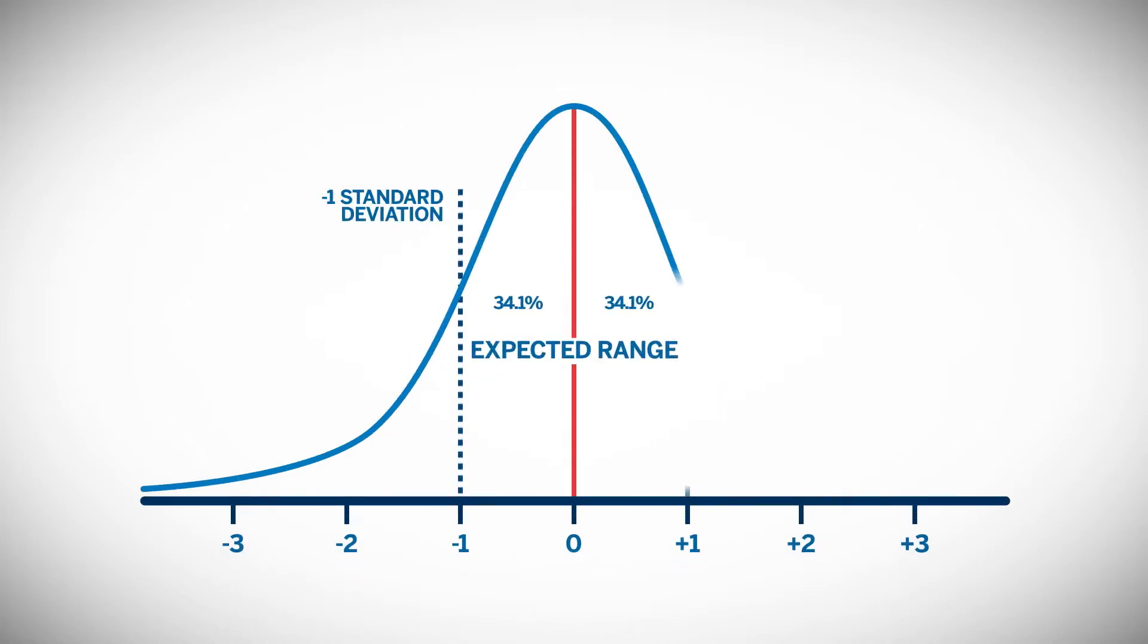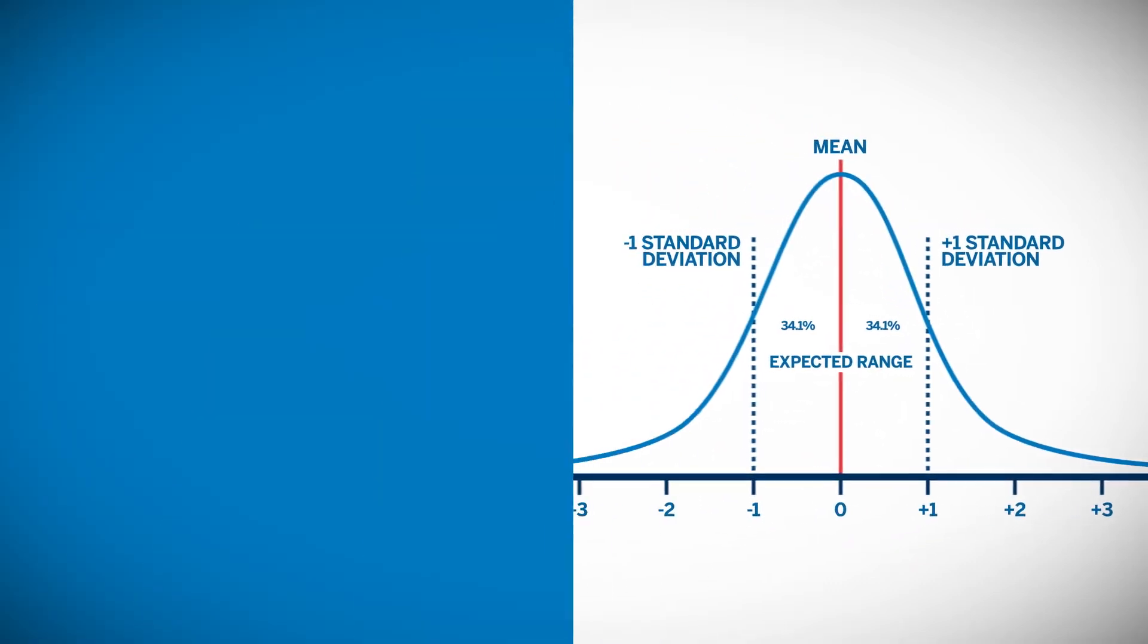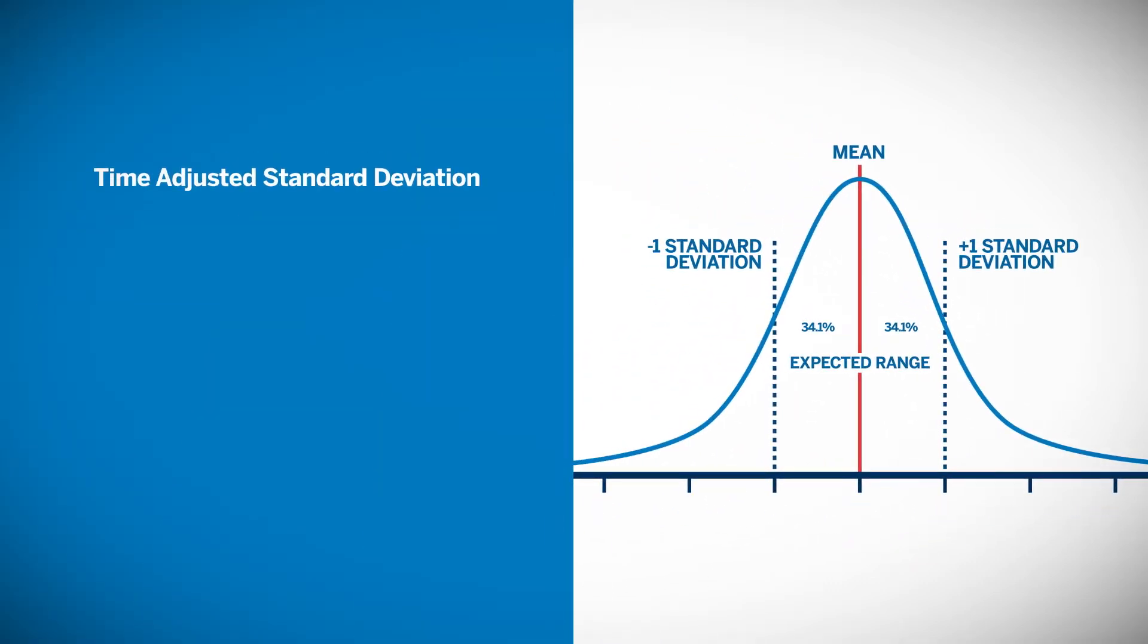Volatility as a measure of bounciness is simply a standard deviation of the underlying asset. In the option world, volatility is quoted as an annualized number. You can calculate a one-year, one-standard deviation move by taking the volatility times the underlying price.